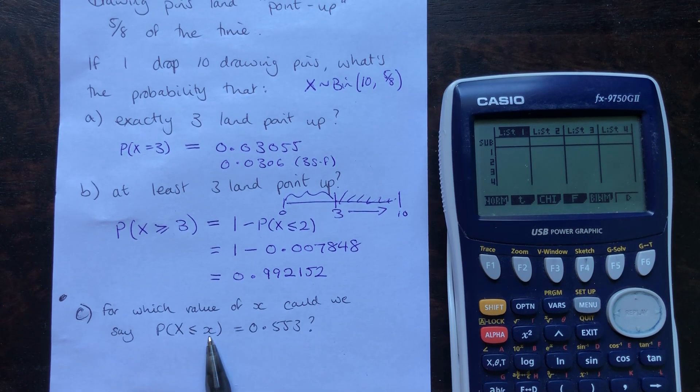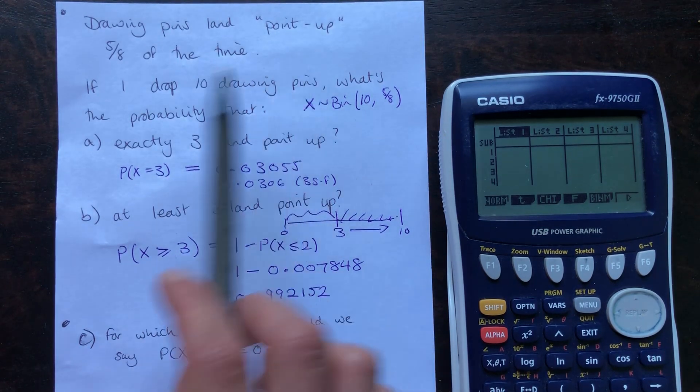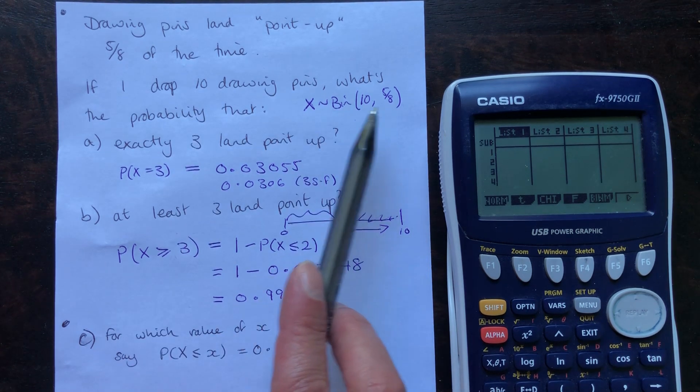We know the probability and we're working out the value of x. I'm sticking with the same situation of drawing pins landing point up 5/8 of the time, dropping 10 of them. So it's following this binomial distribution.